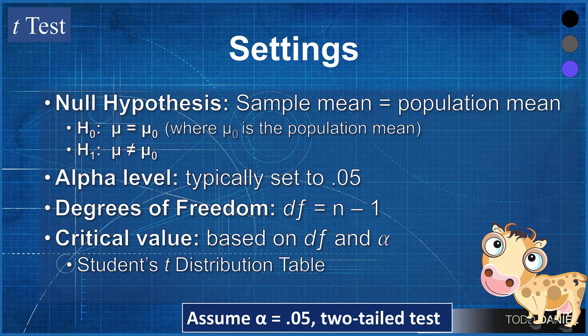For our alternative hypothesis, we will write h sub one, colon, mu does not equal mu sub zero, and again, we will substitute the population mean where it says mu sub zero. Typically, we'll set our alpha level to 0.05.